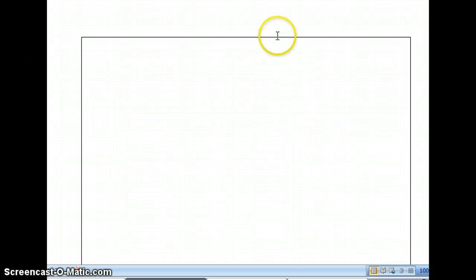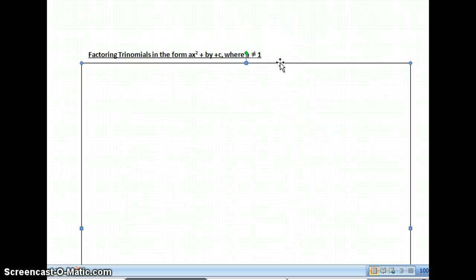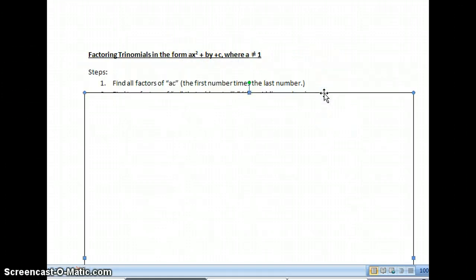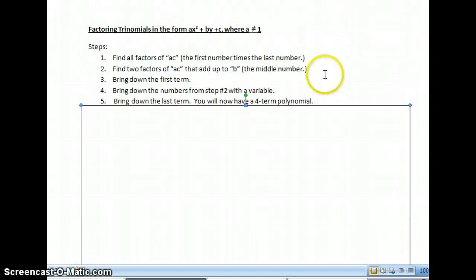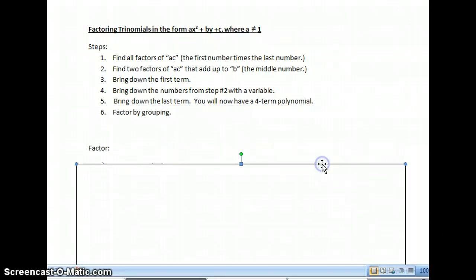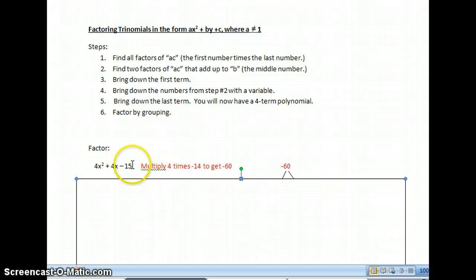Now, we're going to go over factoring a trinomial in the same form where that a is not 1, where it might be 2 or 3 or 5 or something else. So we're doing what's called the AC method. And this is not harder. It's just more steps. So as I go down, let me show you. Let's say the directions say to factor 4x squared plus 4x minus 15. So the first thing I want to do, obviously, is look at 4, 4, and 15 and see if I can factor anything out. I can't, so I'm just going to leave it like that.